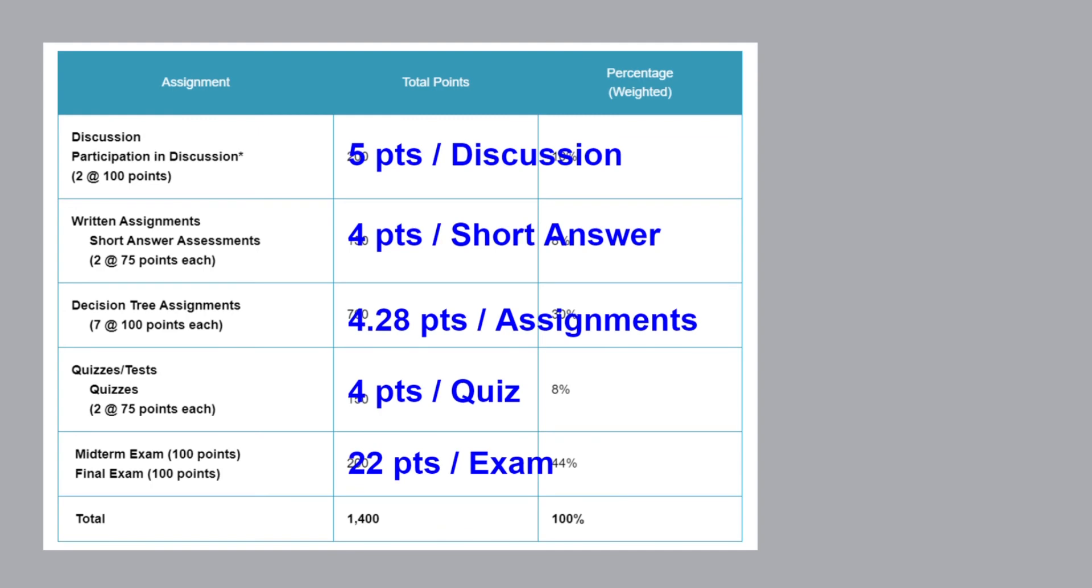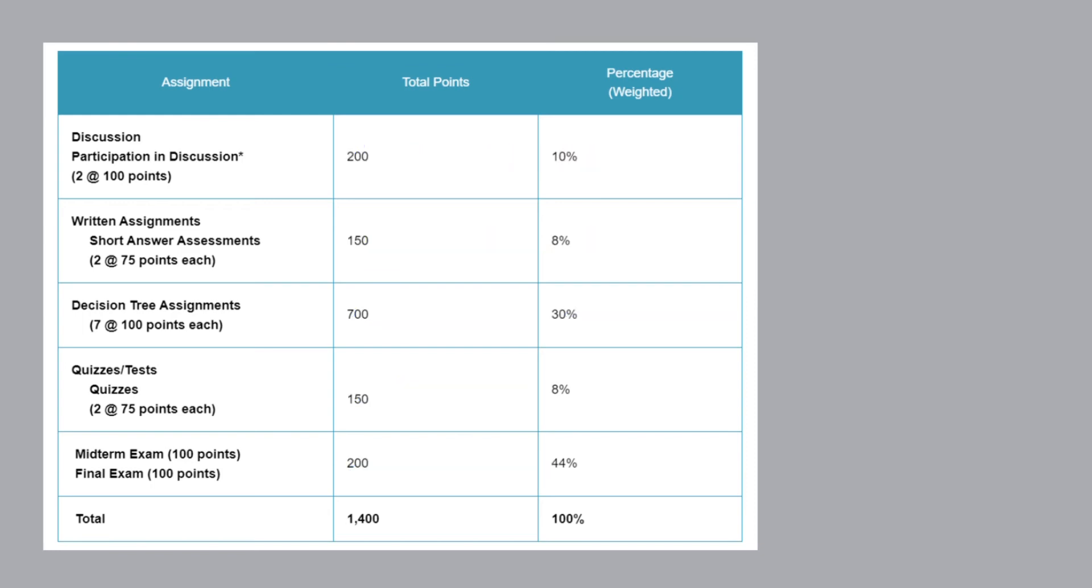So for discussion as you can see, five points per post, four points for short answers, 4.28 for assignments. However the assignment is very important because even though it's 4.28 points, it doesn't mean that this is low. It's actually, if we go back, this is 30% of your grades. So you want to make sure that you hit every single assignment. Not only you're looking at the points, you're also looking into the weighted or the percentage of that particular work.